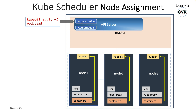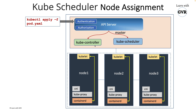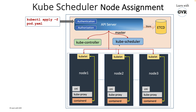The kube-apiserver passes through authentication and authorization phases. It also has the kube-controller-manager as a plugin. Then comes the kube-scheduler, another key component. Finally, everything is stored in the etcd database. When creating a pod in a three-node cluster, the kube-scheduler decides which node to schedule it on.